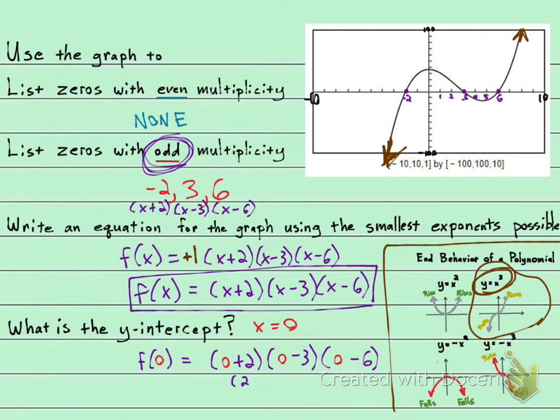Which is going to be 0 plus 2 times 0 minus 3 times 0 minus 6. All right, and that is 2 times negative 3 times negative 6. Put that in your calculator and you will get a positive 36. That's the y-intercept.